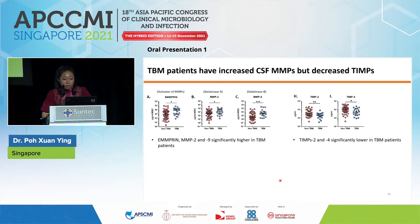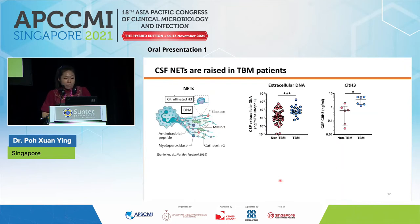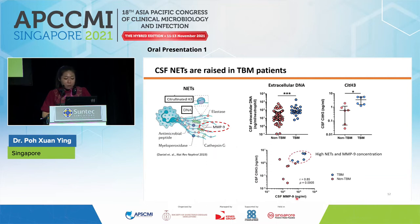TIMP2 and TIMP4, which are endogenous MMP inhibitors, were significantly lower in TBM patients. With higher MMPs and lower TIMPs, this demonstrates the presence of a matrix-degrading phenotype in TBM patients. CSF NETs, as measured by extracellular DNA and citrullinated H3 concentration, were significantly higher in TBM compared to non-TBM patients. A significant positive correlation was found between citrullinated H3 and MMP9 concentrations. TBM patients form a cluster with high NETs and MMP9 concentrations compared to non-TBM patients.